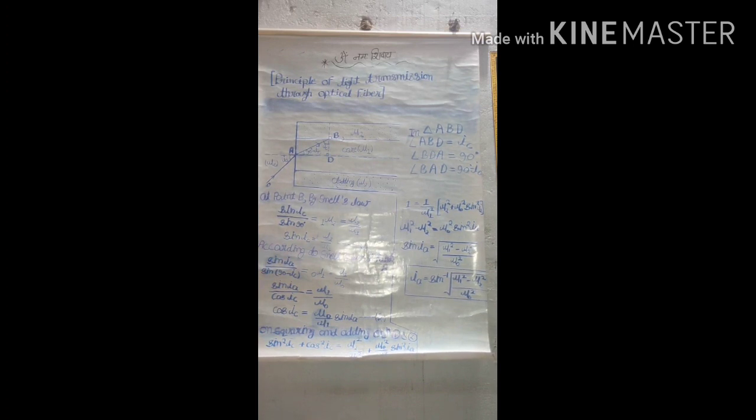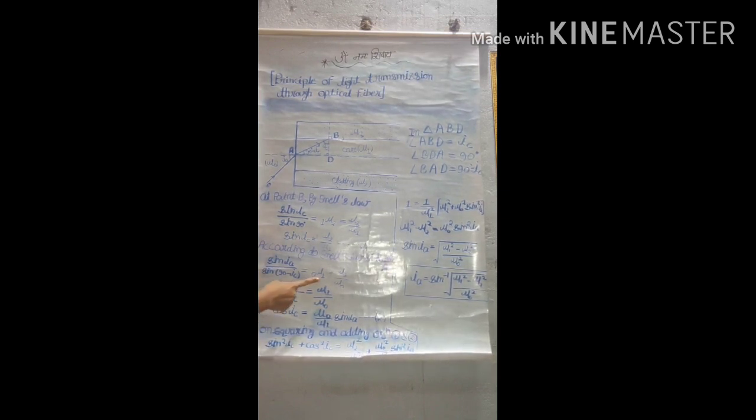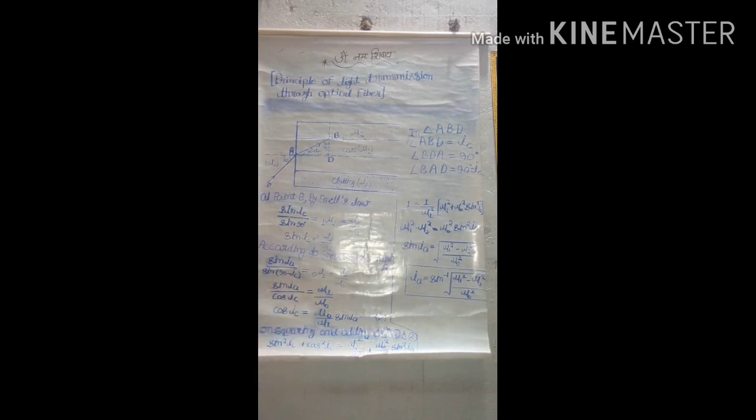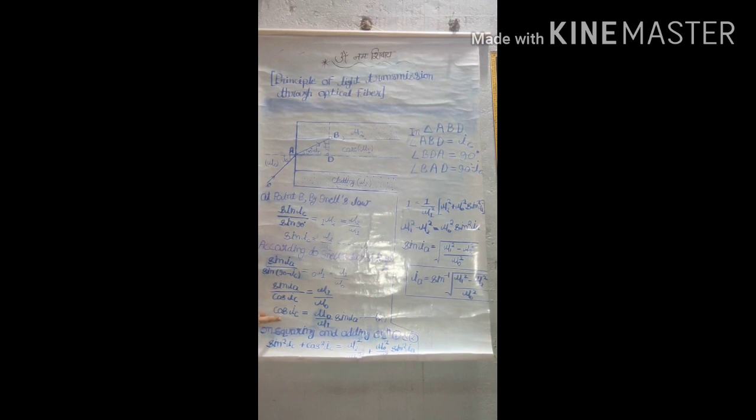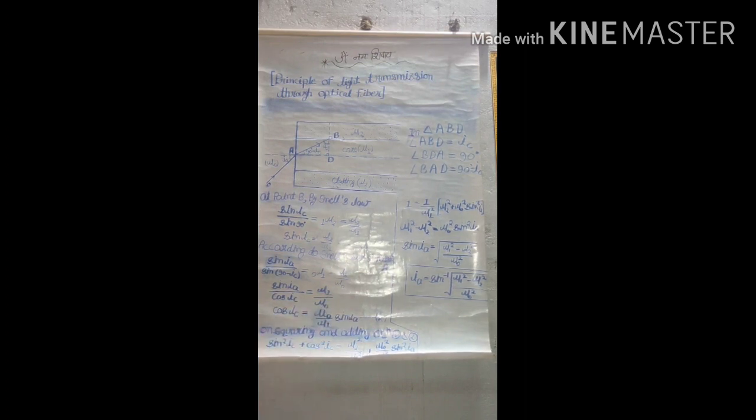Now by trigonometry, we are familiar with sin (90 minus theta) equals cos theta. So here we can write sin IA upon cos IC equals mu1 upon mu0. Now by cross multiplication, we get the value of cos IC equals mu0 upon mu1 times sin IA. That is equation number 2.